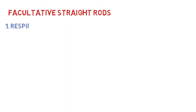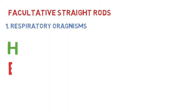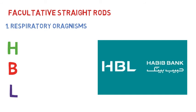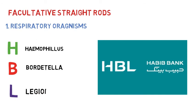Coming back to the classification of facultative straight rods, here is a mnemonic to memorize pathogens involved in respiratory tract infections. Imagine you have to buy something very expensive and for that you need to withdraw a lot of money from a bank called HBL, a famous bank in Pakistan. While withdrawing the money you start breathing fast, and this condition resembles symptoms of a respiratory tract disease. The names of the pathogens are Haemophilus, Bordetella, and Legionella.